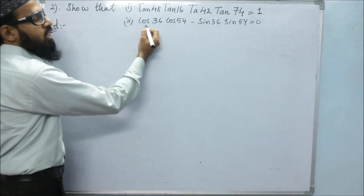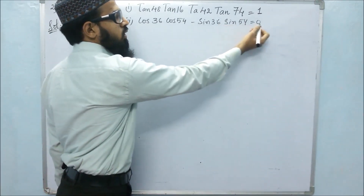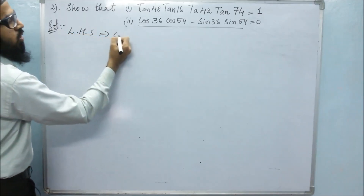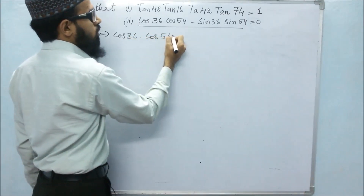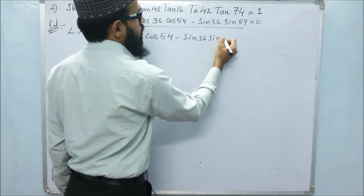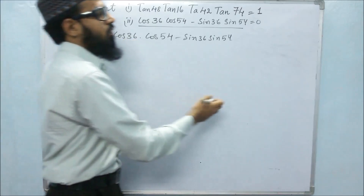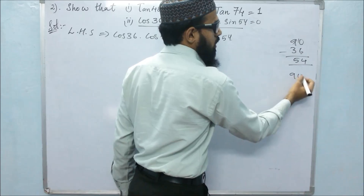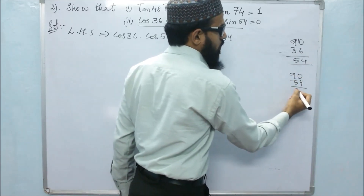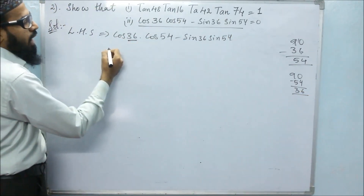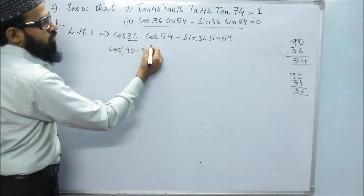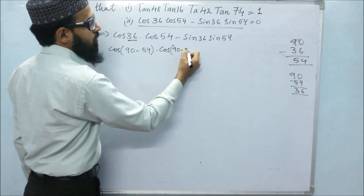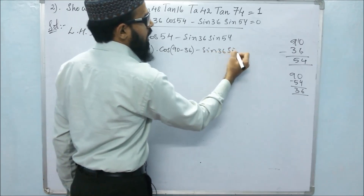In the second part, they said that cos36 × cos54 minus sin36 × sin54 equals 0. So to get the value 0, let's take LHS. LHS is cos36 × cos54 minus sin36 × sin54. If we subtract 36 from 90, we get 90 minus 36 = 54. And if we subtract 54 from 90, we get 36. So in place of cos36, we can write cos(90 minus 54). And for cos54, we can write cos(90 minus 36), minus sin36 × sin54.